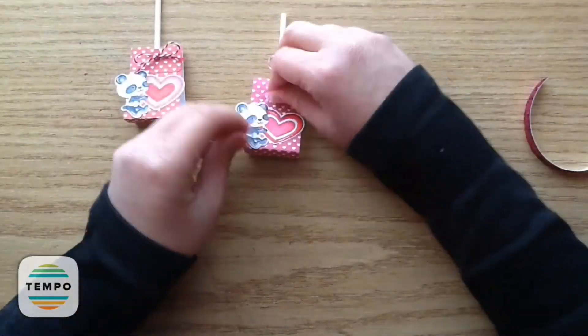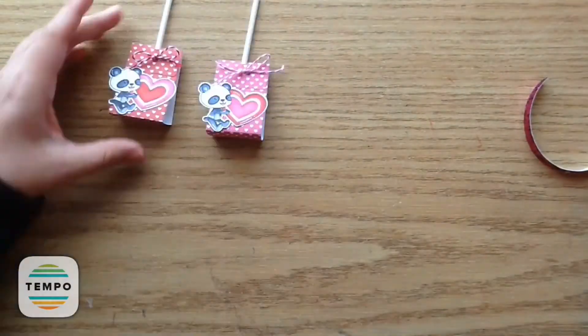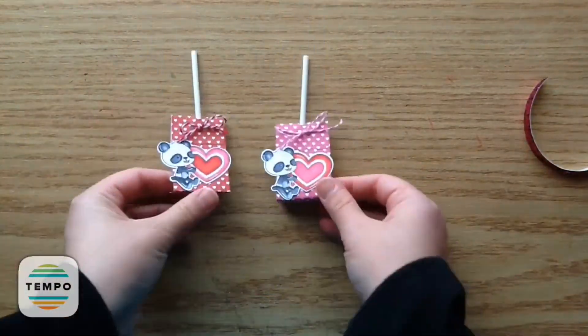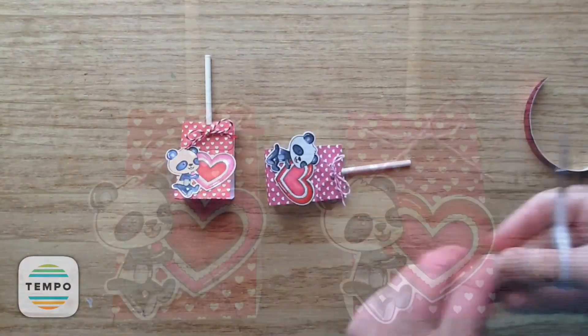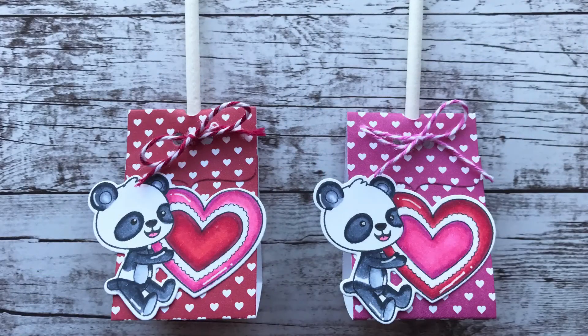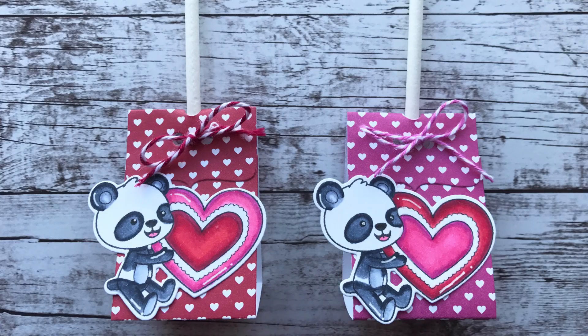So I hope you guys enjoyed this video. I know someone had mentioned they'd like to see an older Your Next Stamp die or stamp set used with a newer Your Next Stamp product. So I used this Your Next Stamp lollipop die, which is one of my all-time favorites and mixed it with this new release stamp set. So I hope you enjoyed. I will have everything linked in the description box below. Please make sure to head over to the Your Next Stamp YouTube channel and subscribe. And I will see you guys in next week's video. Bye now.